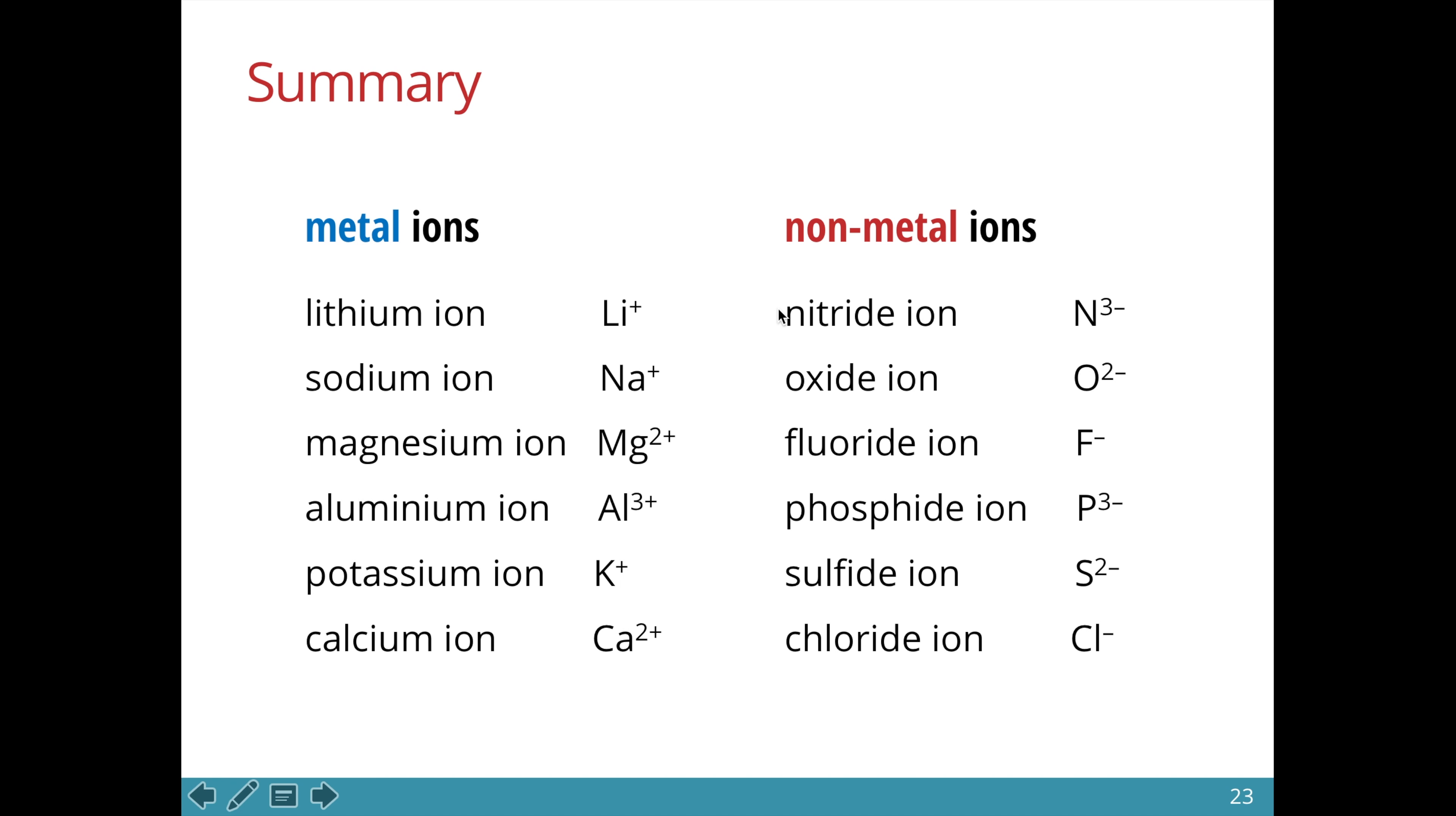For non-metal ions, they follow a naming rule in which the name ends with IDE. So a nitrogen atom would form a nitride ion. An oxygen atom would form an oxide ion. A fluorine atom would form a fluoride ion and so on and so forth.